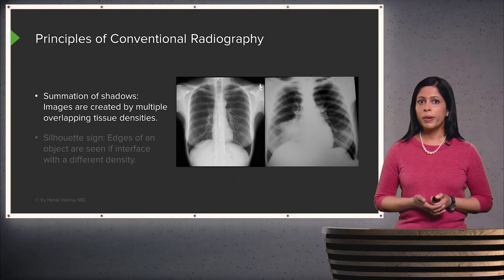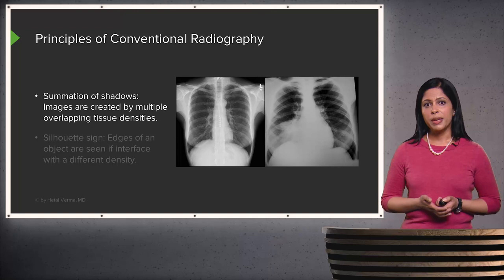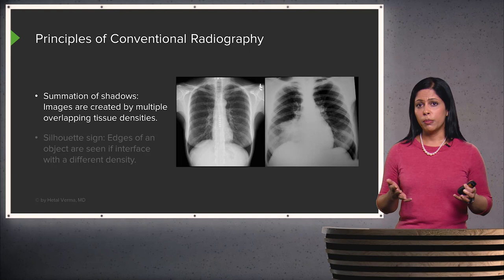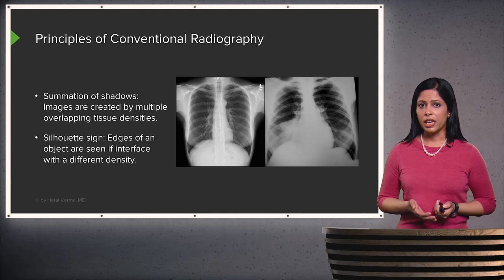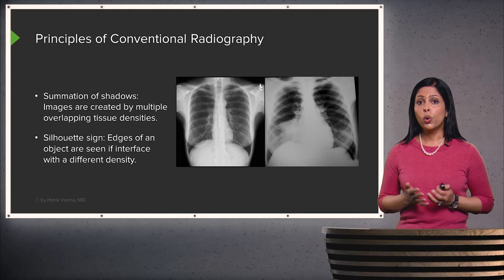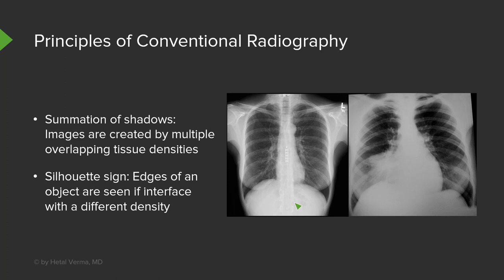There are two basic principles of conventional radiography. The first is called summation of shadows, which means that images are created by multiple overlapping tissue densities, and the density of the object increases as you have more overlap. As you can see here, this area appears very dense because you have overlapping of multiple objects — a summation of shadows.